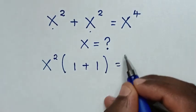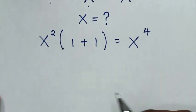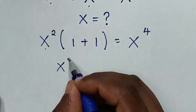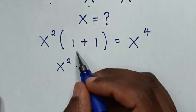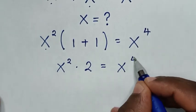is 1. The bracket is equal to x⁴. Then in the next step, our equation will be x² times, this plus this is 2, is equal to x⁴.